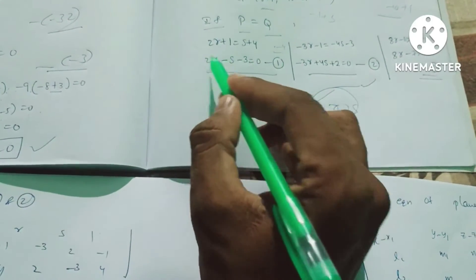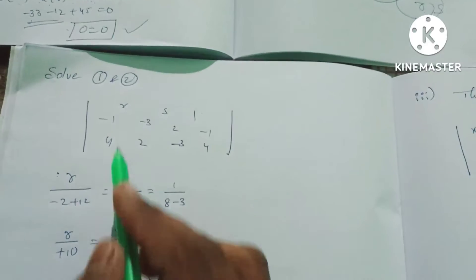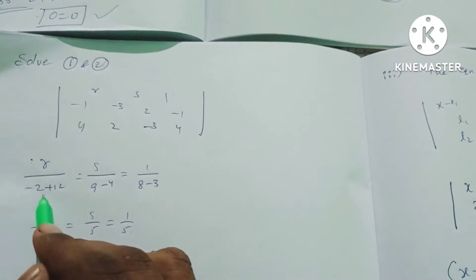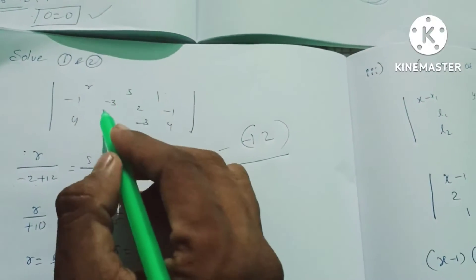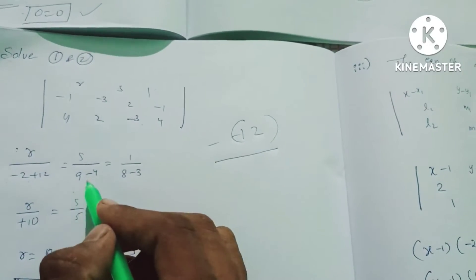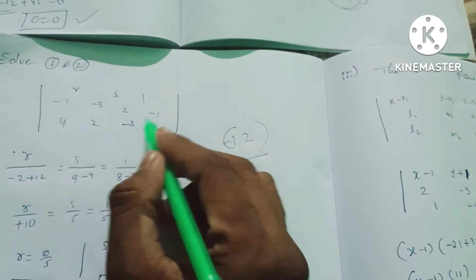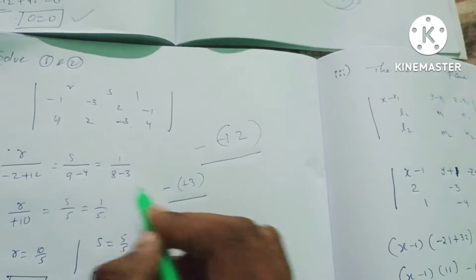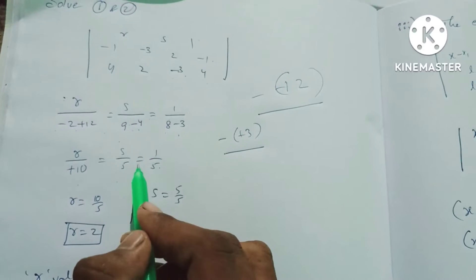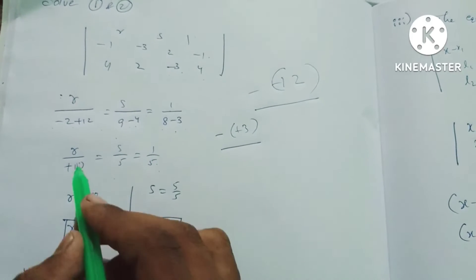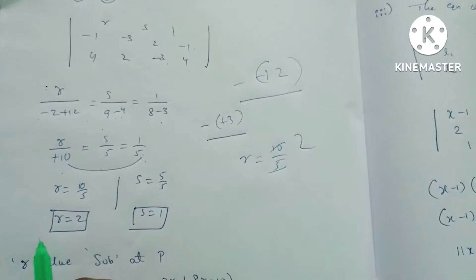Setting up the system: from the determinant calculation, R/10 = S/5 = 1/5, giving R = 2 and S = 1.